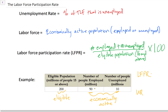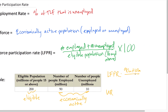The labor force participation rate is the number of people employed and unemployed — that's 90 million plus 10 million — divided by the eligible population of 200 million, multiplied by 100. That gives us 100 million divided by 200 million, times 100, which is 50%. So of the eligible population — the adults who are not institutionalized and not in the military — 50% are either looking for a job and unable to find one, or actually have a job.